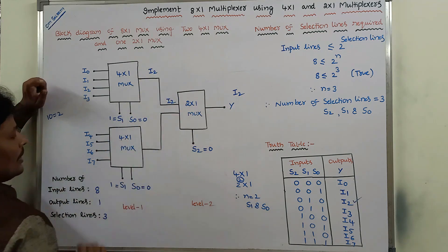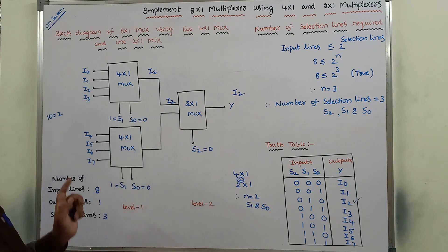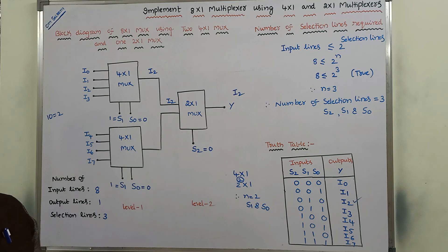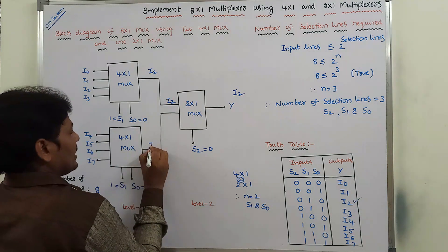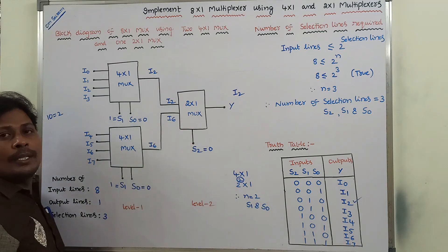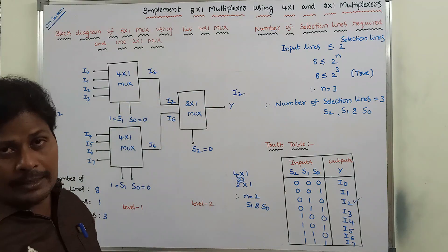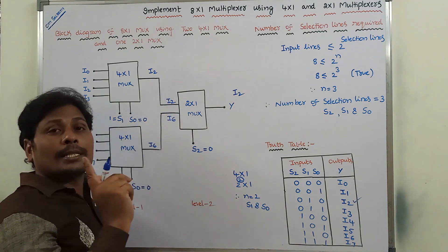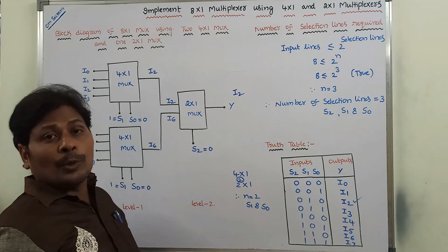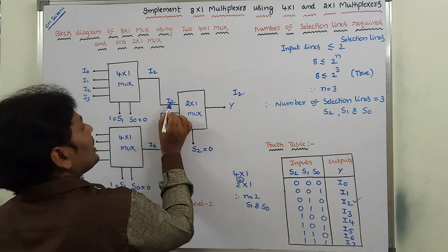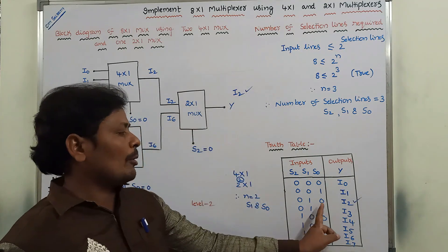For the lower 4 by 1 multiplexer, S1 equal to 1 and S0 equal to 0 gives decimal 2, so I6 is selected and sent as output. Now the 2 by 1 multiplexer takes two inputs: I2 and I6. Since S2 is equal to 0, it selects the first input, which is I2, and sends it as the output. Therefore Y is equal to I2.